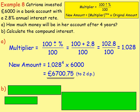Remember, money has two decimal places, so round your answer when it's money to two decimal places.